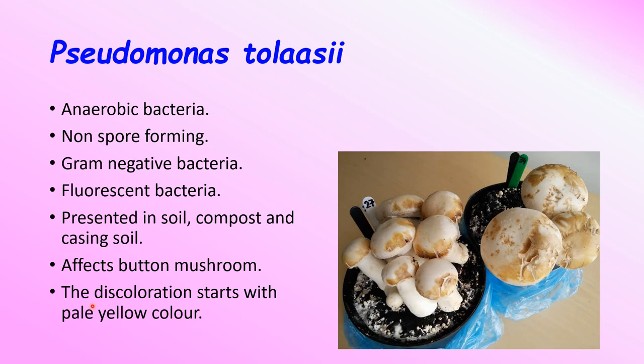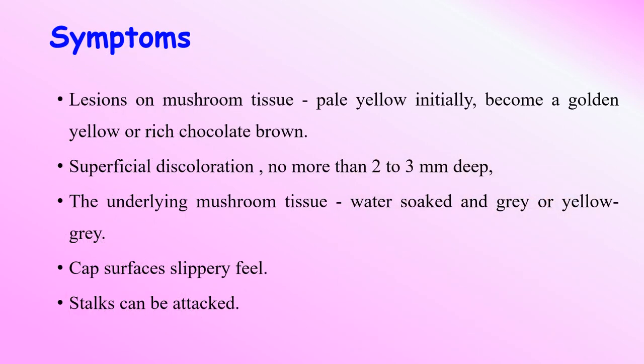The discoloration starts with a pale yellow color and becomes darkened to golden yellow. The major source of contamination arises from soil and water. High humidity and too much water irrigation are favorable conditions for Pseudomonas tolaasii. It is majorly spread by tyroglyphid mites, and this blotch can also appear at any stage during harvest and storage of mushroom.